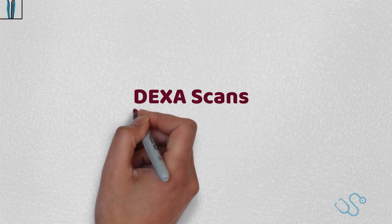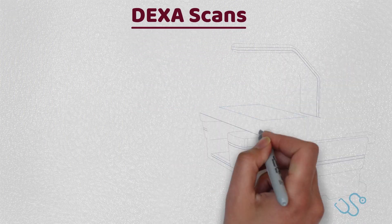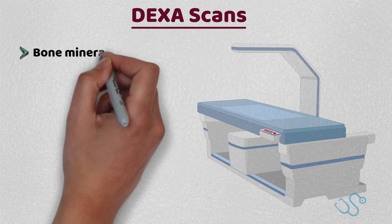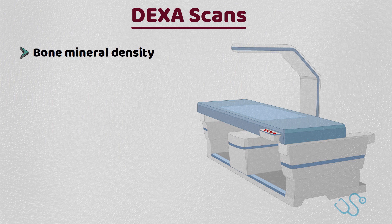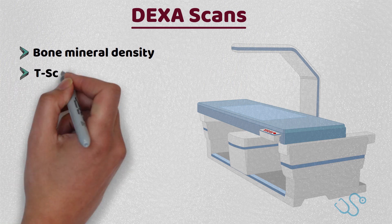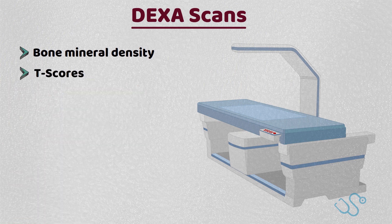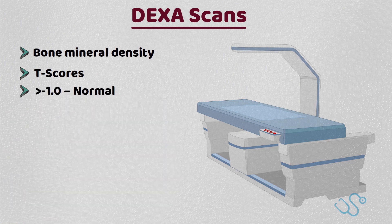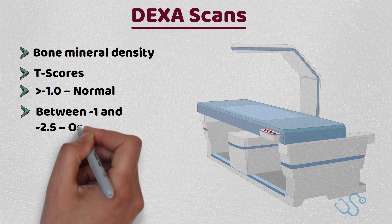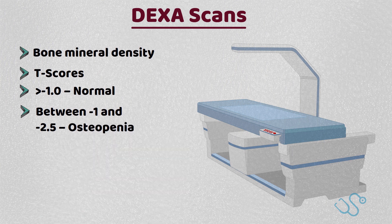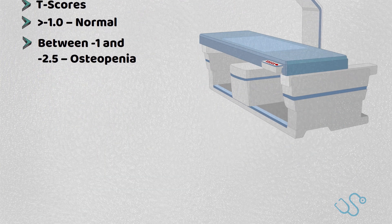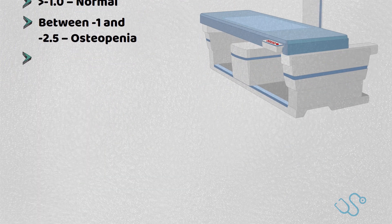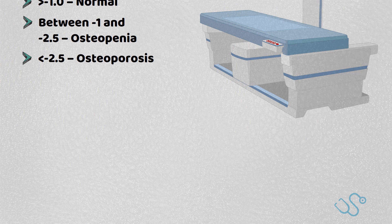DEXA scans provide a numerical value to give an objective assessment of bone mineral density. For your exams, you really only need to know about the T-scores, which are usually negative numbers derived into three categories: above minus 1.0 is normal; between minus 1 and minus 2.5, the patient is osteopenic; and below minus 2.5, the patient is osteoporotic.